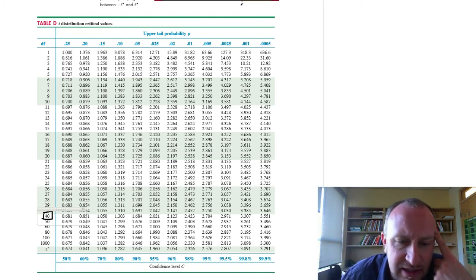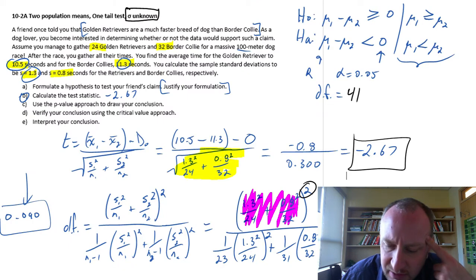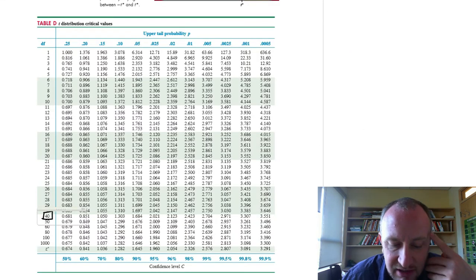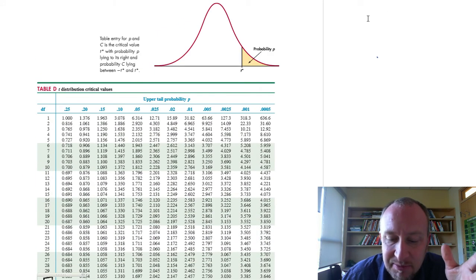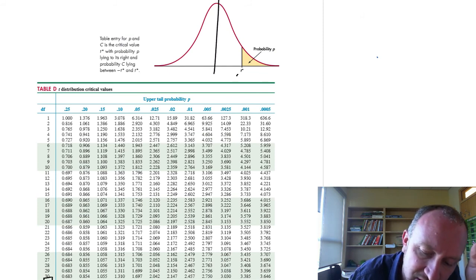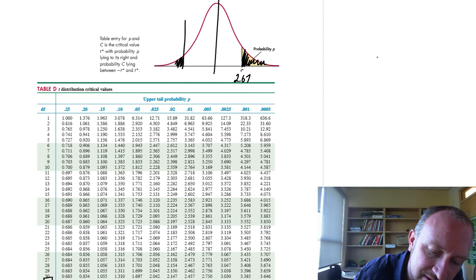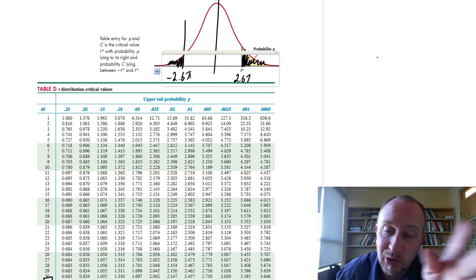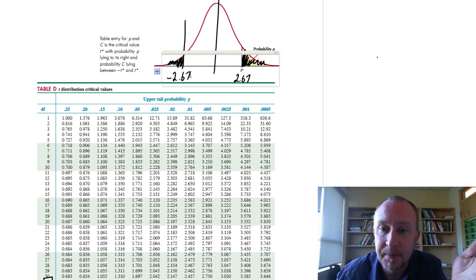So we want to use this now to find our test statistic, which was 2.67. Now this is a negative test statistic, but that's okay. All of our values here are positive, but again, this is a perfectly symmetric distribution. So if I look at positive 2.67, this will give me the area in that upper tail, and that's fine, because that will be exactly the same as the area on the lower tail below negative 2.67. And this is a lower tail test, and so that lower tail, that's the probability that we want.